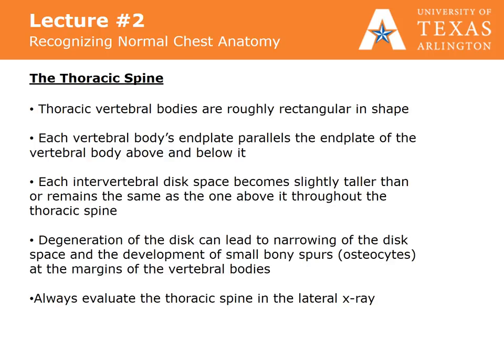Thoracic vertebral bodies are rectangular in shape. Each vertebral body's end plate parallels the end plate of the vertebral body above and below it. Each vertebral disc space becomes slightly taller than or remains the same as the one above it throughout the thoracic spine. Degeneration of the disc can lead to narrowing of the disc space and development of small bony spurs called osteophytes at the margins of the vertebral body. Always evaluate the thoracic spine on the lateral x-ray. If there is a compression fracture, normally associated with osteoporosis, the vertebral body loses its height.